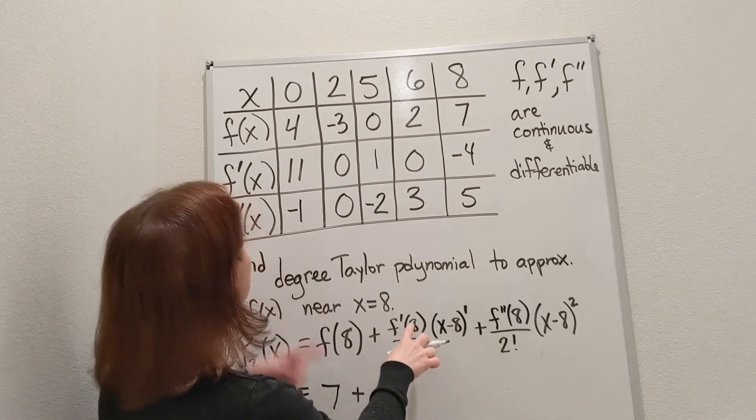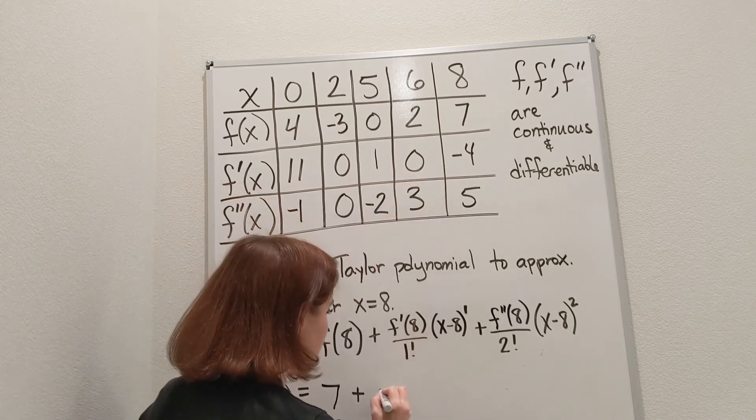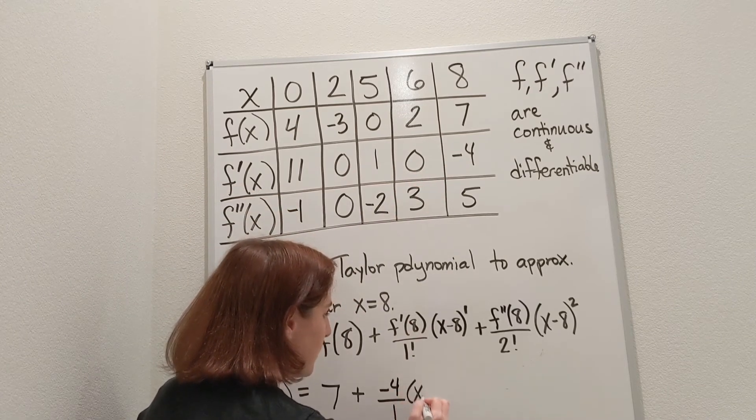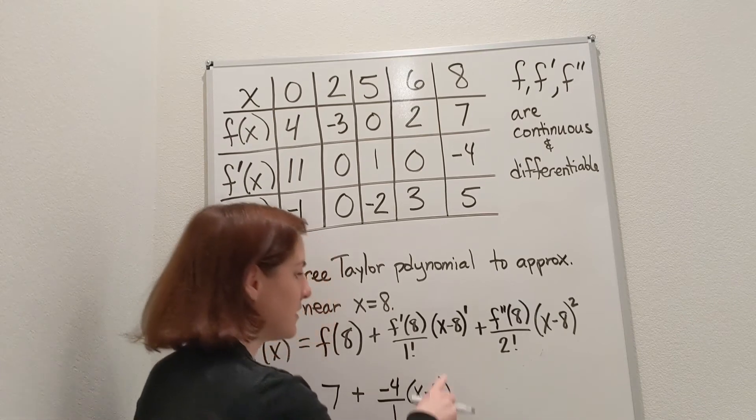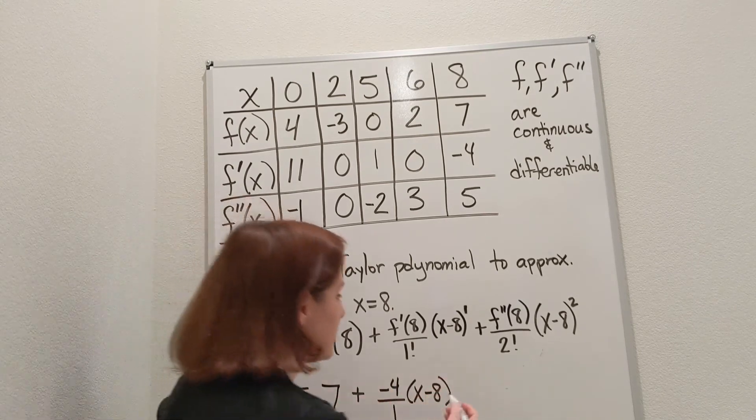Plus f prime of 8 is negative 4. 1 factorial is 1. And we have x minus 8. It's to the 1, but we don't have to put that in because it's just a 1.